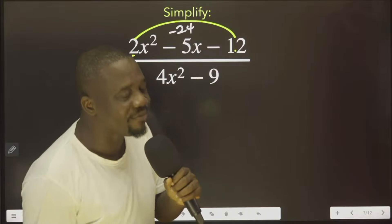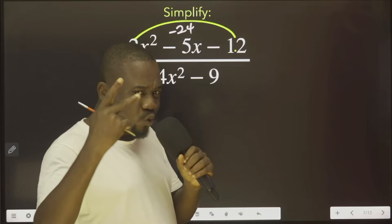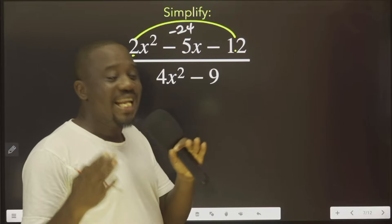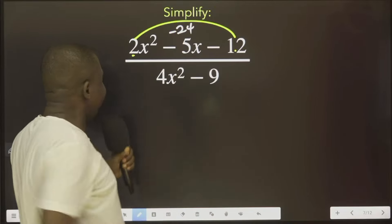You now ask yourself, what are those two values? If I multiply them, I will have minus 24. And if I add them, I have minus 5.